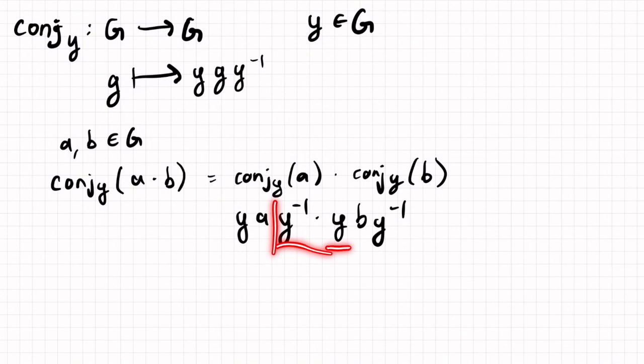And then, quite magically, these inside y's will cancel. We'll have a y inverse times a y. Because we have that y inverse times that y, that means we'll get y times a times b times y inverse, which if we expand the definition of this side is exactly y times a times b times y inverse is exactly what we get.